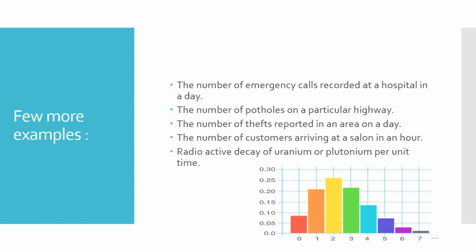Number of potholes in a particular highway. See, it's a little bit different example, because here the interval becomes the length of that highway. The event remains the same, but the interval is different. It becomes the length of that highway.